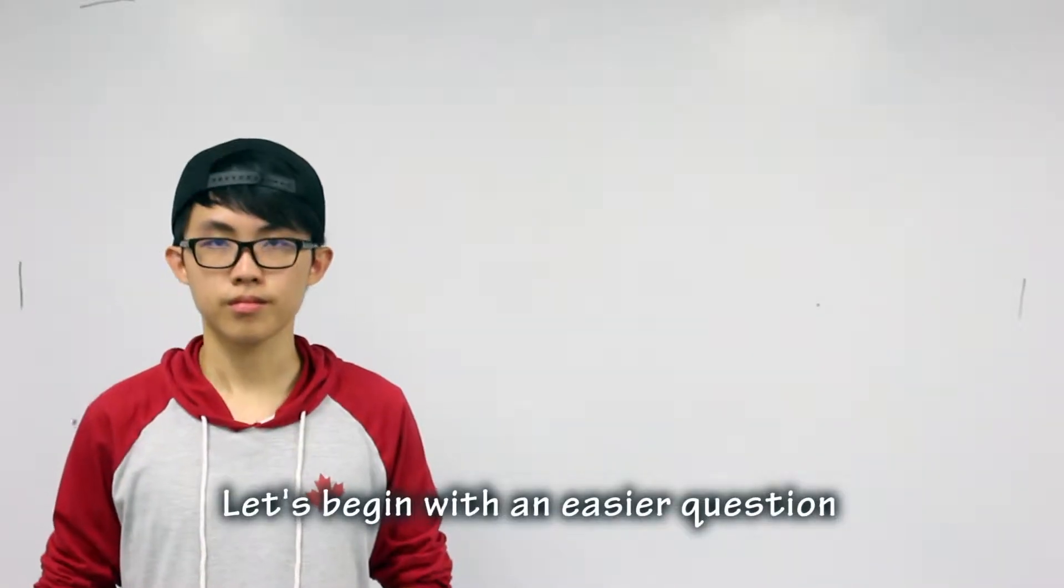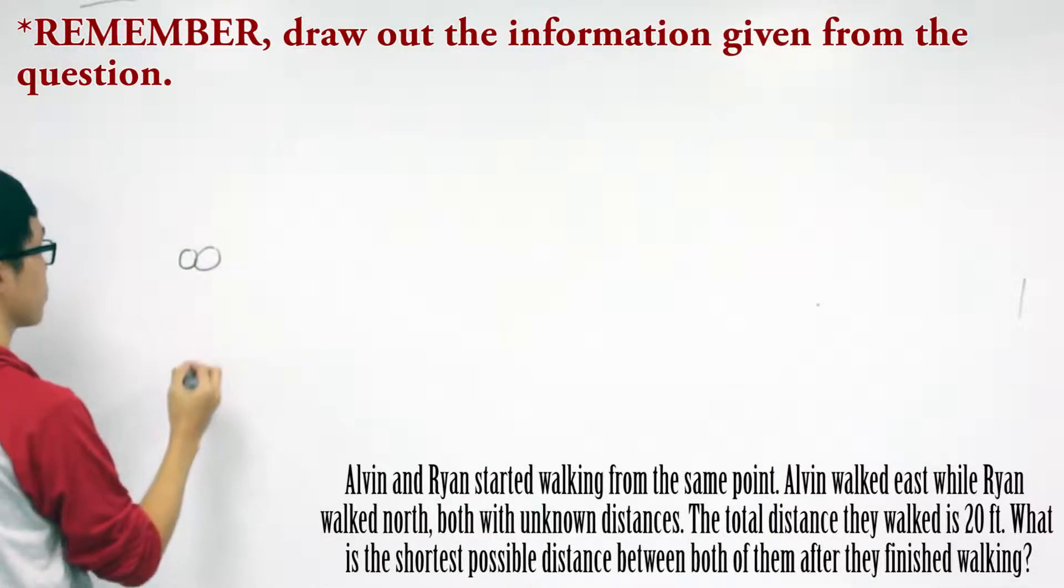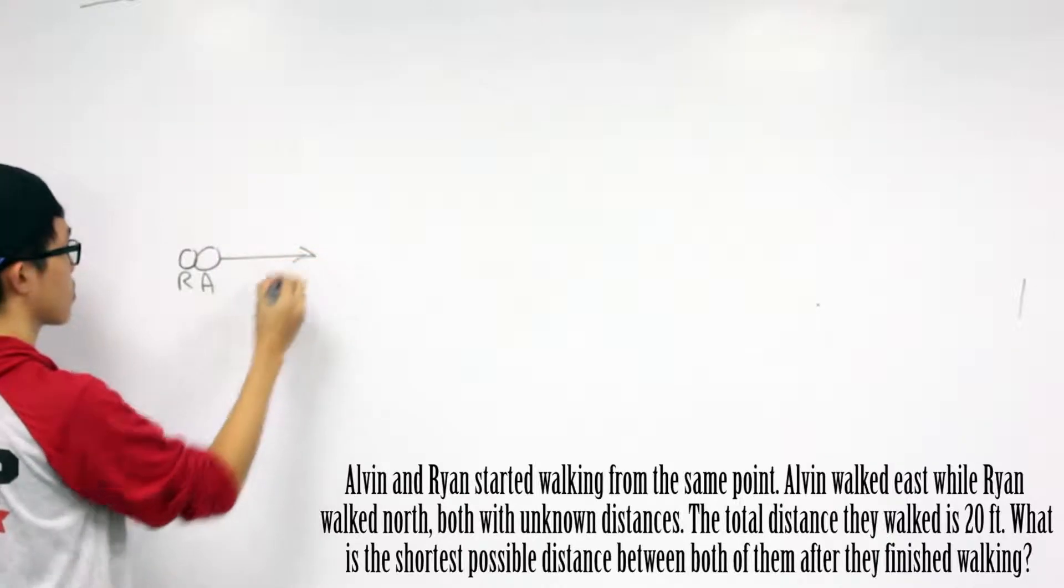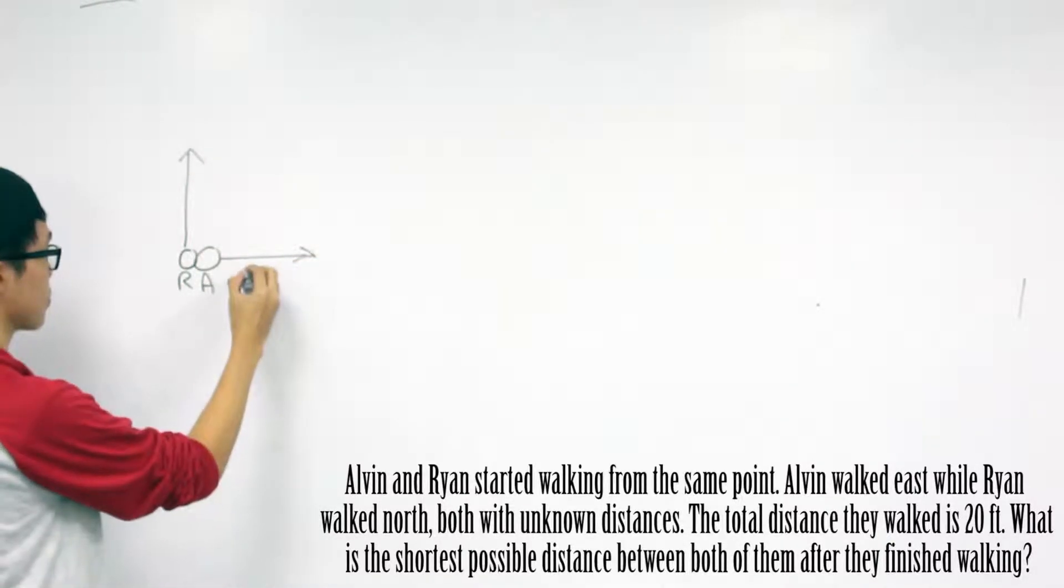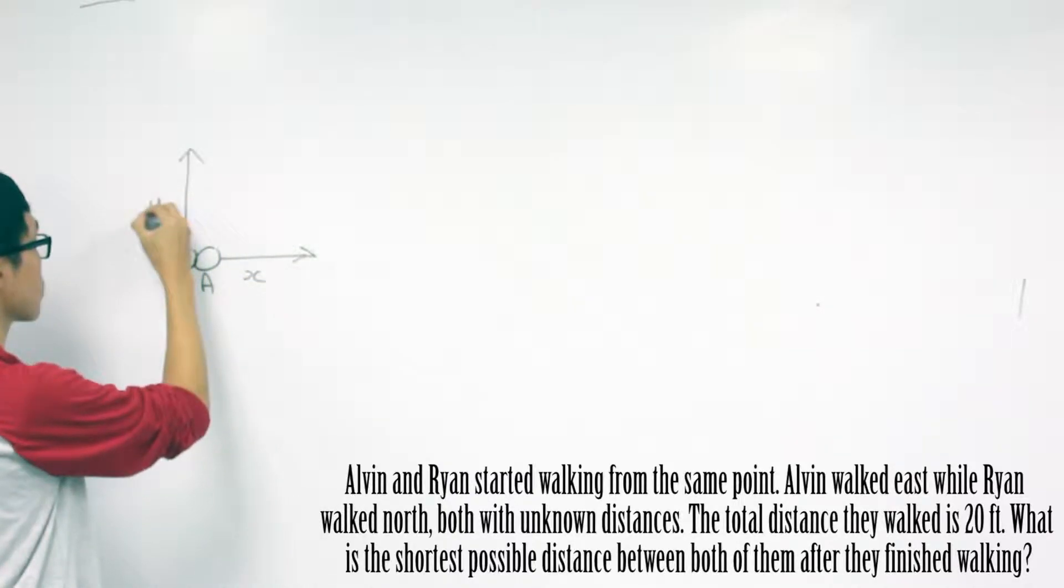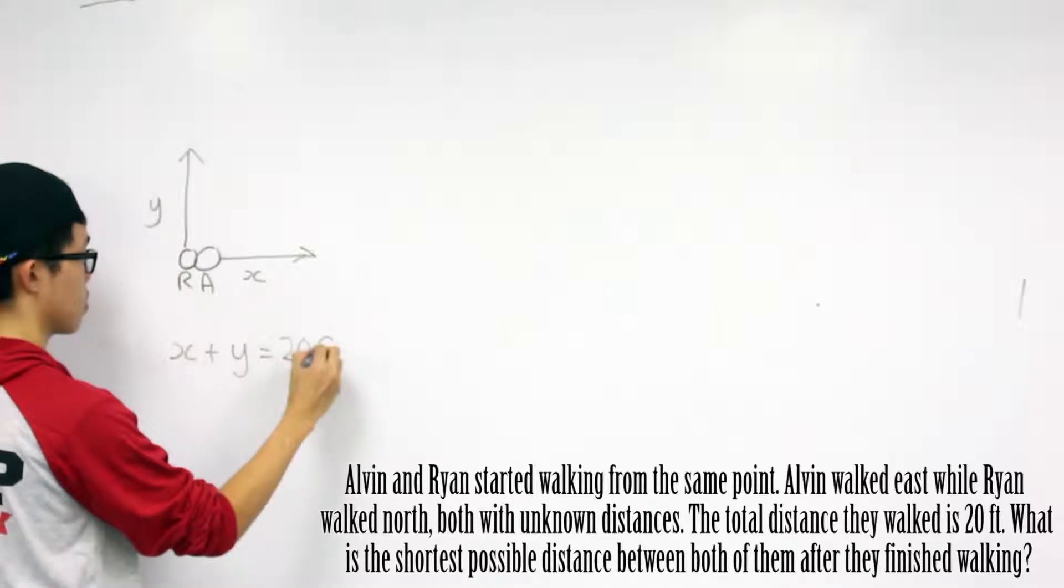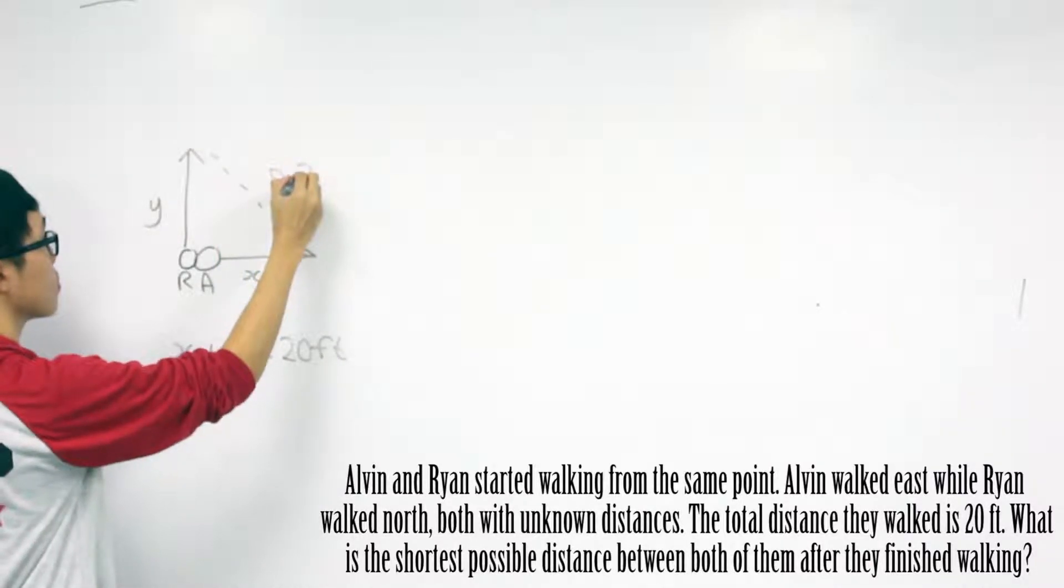Let's begin with an easier question. Alvin and Ryan started walking from the same point. Alvin walked east while Ryan walked north, both with unknown distances. The total distance they'd walked is 20 feet. What is the shortest possible distance between both of them after they finished walking?